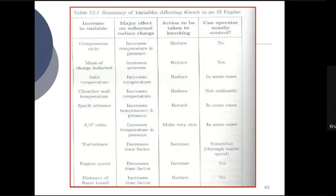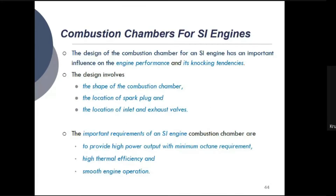The various factors that affect the knocking tendency in petrol engines are: compression ratio, mass of charge inducted, inlet temperature, chamber wall temperature, spark advance, air-fuel ratio, turbulence, engine speed, and the distance of flame travel, which relates to the geometric dimensions of the engine. After discussing all these factors and the combustion phenomena, today we discuss the various types of combustion chambers for the petrol engine.